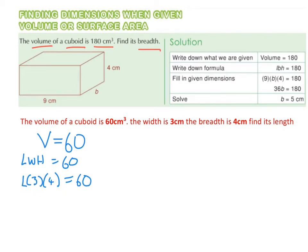So now we multiply out the brackets and then we solve for L. 3 by 4 is 12. So we get 12L equals 60. And now we solve for L. 60 divided by 12 is 5. So the length is going to be 5 centimeters.